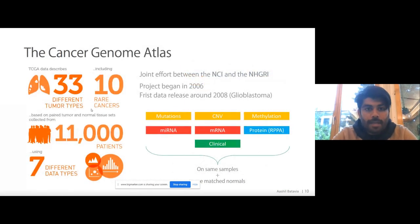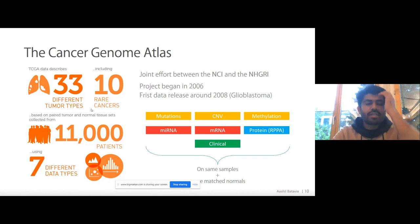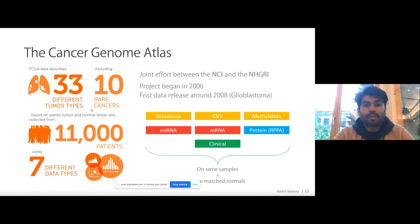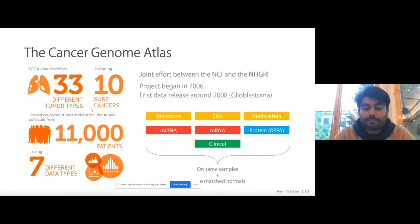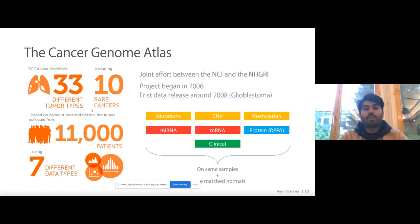The Cancer Genome Atlas was first begun in 2006 between the National Cancer Institute and the National Human Genome Research Institute. The first release of data was just two years later with genomic data for glioblastomas. What makes TCGA such an amazing resource is that it consists of 33 different tumor types, 11,000 patients, and — uniquely — has data for seven different omic types for each of these patients. It contains mutation data, copy number variation, methylation, microRNA, mRNA, and protein expression for the majority of patients, as well as clinical information for all of them. Some datasets also have both tumor and matched normals available.